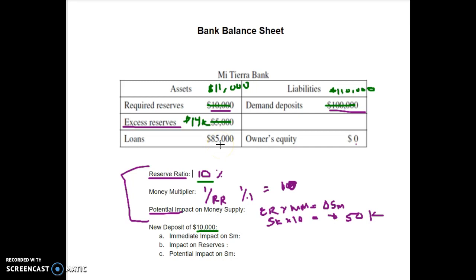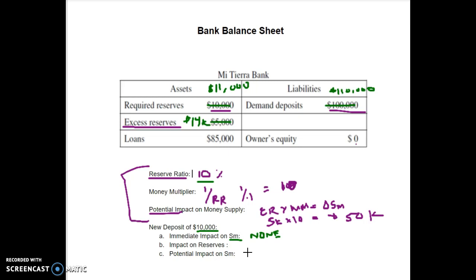Now let's answer the questions. When that $10,000 is deposited, what impact does it have on the money supply? The answer is none. The money is simply changing where it's located — changing who has ownership — but there's no more or less money in the actual economy. It's just going from one person's pocket to a bank account. As for reserves, required reserves went up by $1,000 and excess reserves went up by $9,000 — both increase.